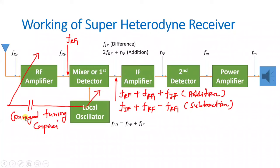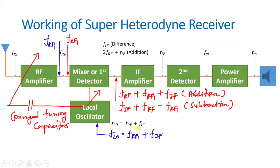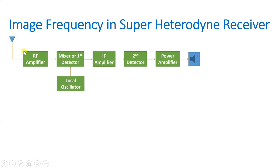The ganged tuning capacitor is connected between the RF amplifier and the local oscillator, ensuring they tune to the same frequency together. So if FRF1 is received, FLO automatically becomes FRF1 + FIF, keeping the difference output exactly FIF. This way, FIF frequency is maintained regardless of the received RF frequency, resolving tuning issues and improving the quality factor of the super heterodyne receiver.